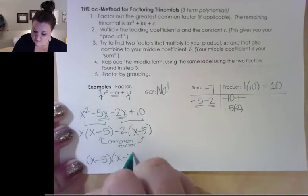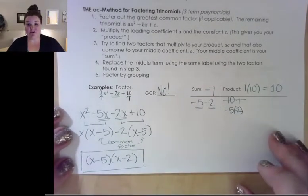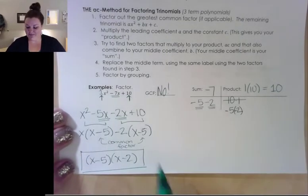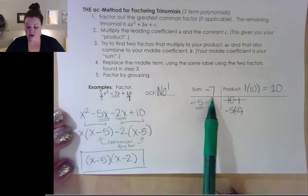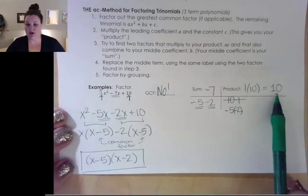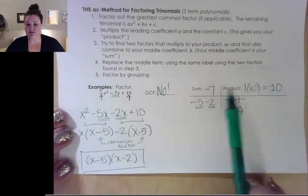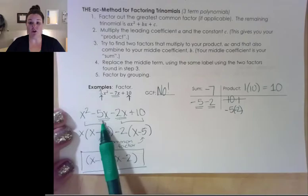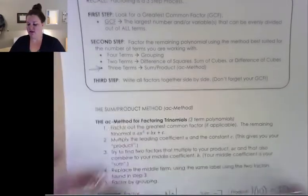Now I can see a common factor. I take that common factor out of both terms — x minus 5 — and what's left over is x minus 2. That is how we factor a trinomial. Quick recap: take the middle coefficient as your sum, multiply the first and last coefficients to get your product, find two numbers that satisfy both, then replace the middle term so you can group.